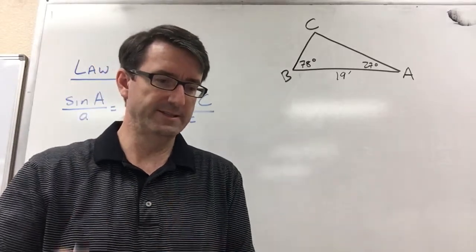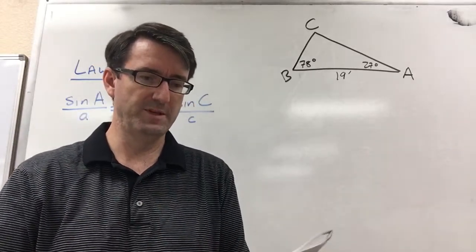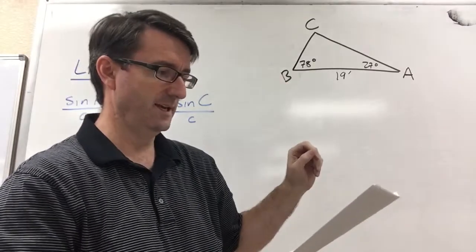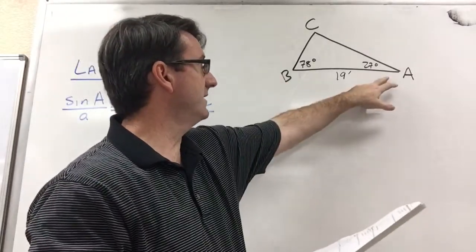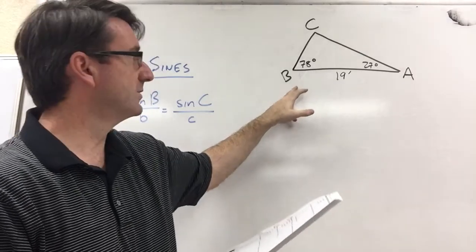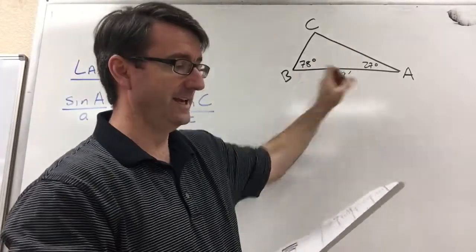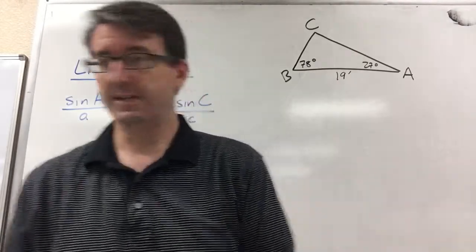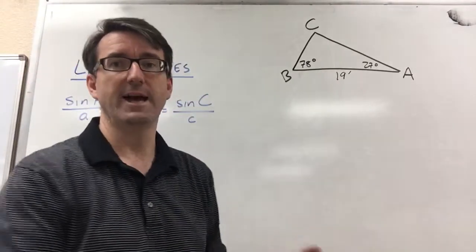All right, number 20 says the side view of a skateboard ramp is a triangle ABC with angle A equal to 27 degrees, angle B equal to 78 degrees, and side C equal to 19 feet. And we're asked to find side A.